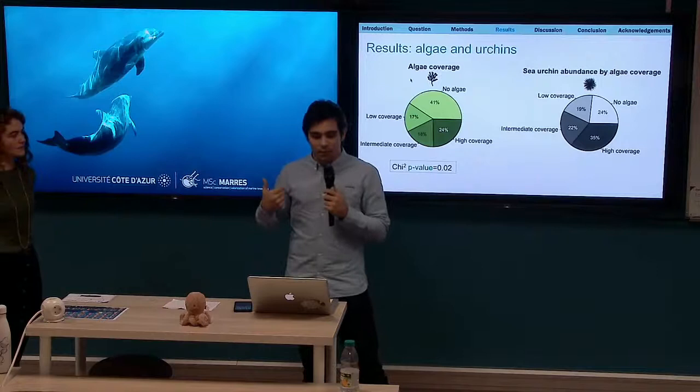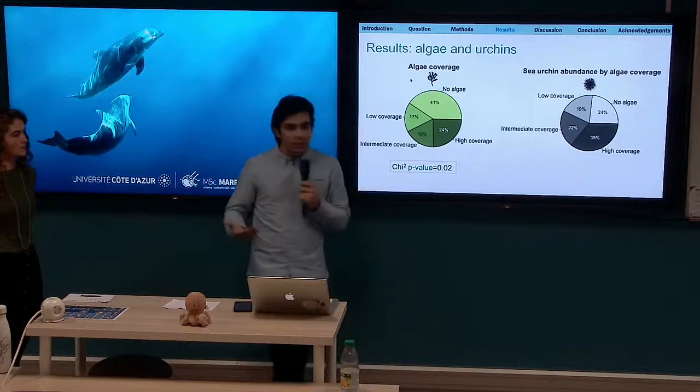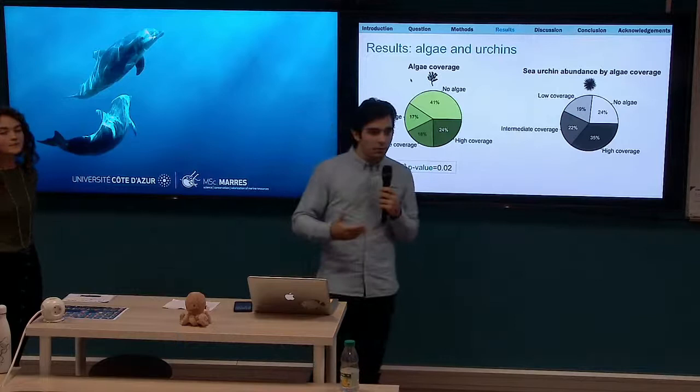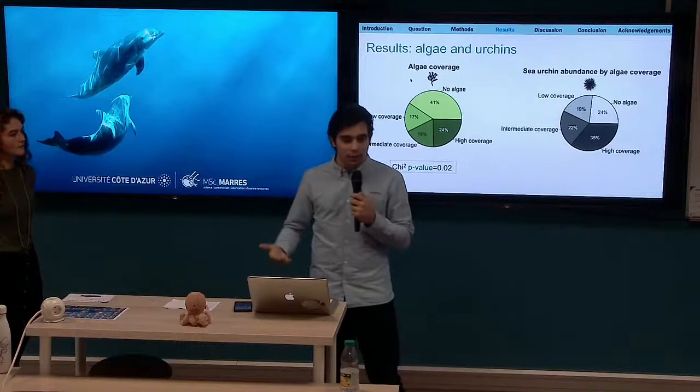We did the same analysis with algae coverage to see if sea urchins prefer places with more or less algae. We found that sea urchins prefer places where there is high coverage of algae — when there is more algae, there are more urchins. This aligns with the correlation test results but is somewhat different from what we found in the bibliography. We then looked for another factor that could influence distribution more than the direct interaction between these three groups.